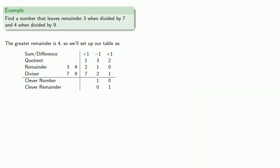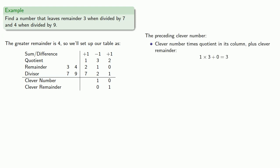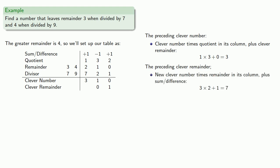We'll go back one more column. The preceding clever number is our clever number times the quotient in its column plus the clever remainder. The preceding clever remainder is our new clever number times the remainder plus the sum or difference, divided by the divisor.